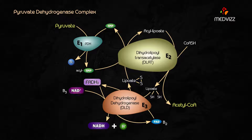FAD oxidizes a lipoic acid intermediate back into lipoic acid so it can participate in more reactions. In this process, FAD is reduced to FADH2, and FADH2 is then used to reduce NAD+ to NADH.